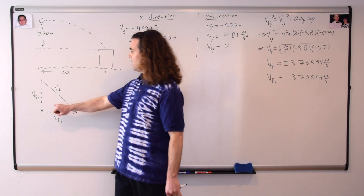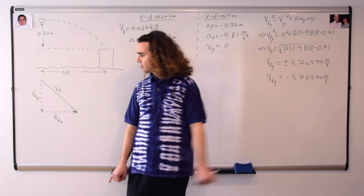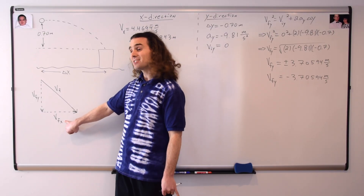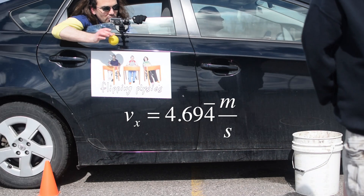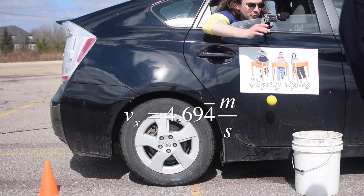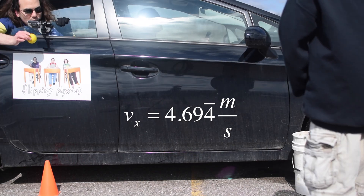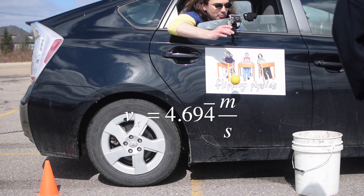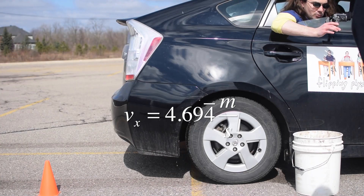We know the final velocity in the y-direction, so we just need one more side of the triangle — the final velocity in the x-direction. Actually, we already know it. The ball is traveling at a constant velocity in the x-direction, so it's always 4.4694444 meters per second. Correct. Because the velocity in the x-direction is constant, it is the initial velocity, the final, the middle — it doesn't matter. It's always the same.